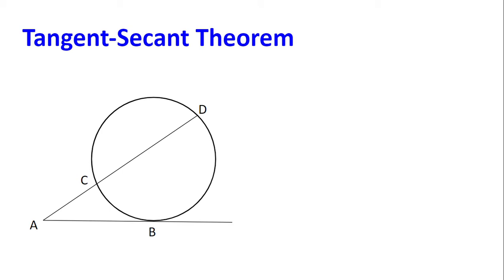So firstly, we are going to draw in the lines BD and BC. And we are going to consider the triangles ABC and ADB. Now, both of these triangles share the angle BAC.